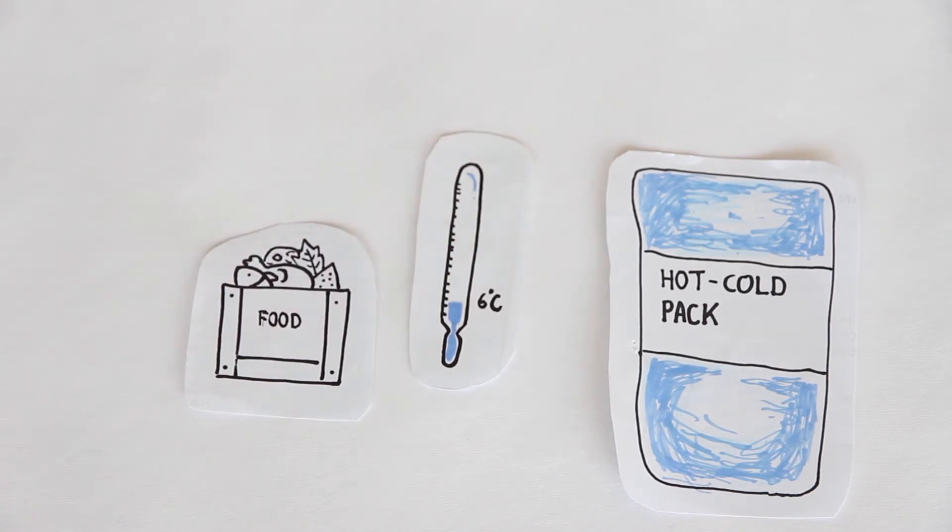The danger zone is a temperature that favors the growth of microorganisms that will cause food spoilage. During transportation, the food is transferred out of the refrigerator or a chiller. This causes exposure to the environment.